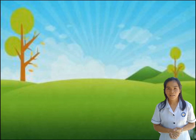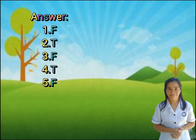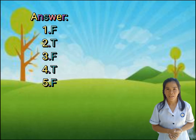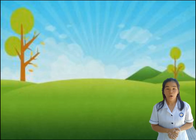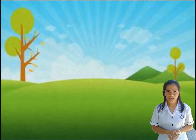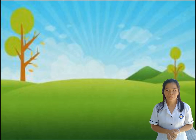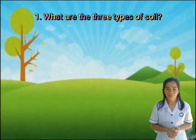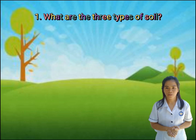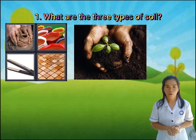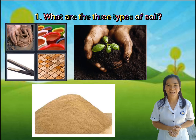Take a look at the answer. You got it right! Very good, class! We're done with our activities. So let's have a recap. What are the three types of soil? The three types of soil are clay, loam, and sand.